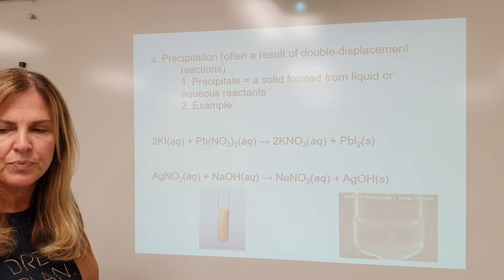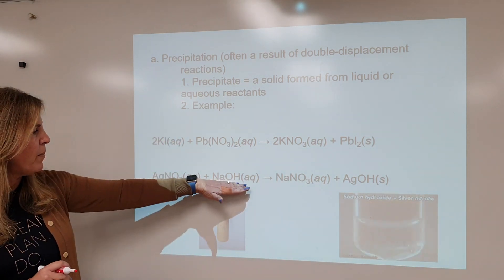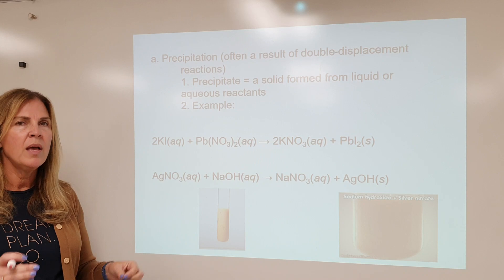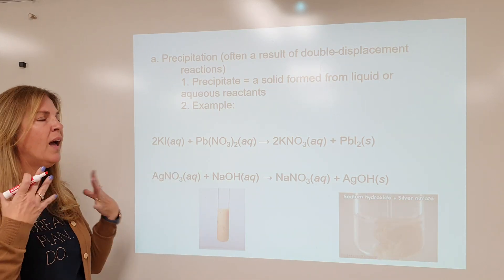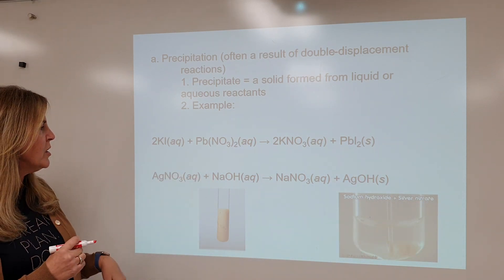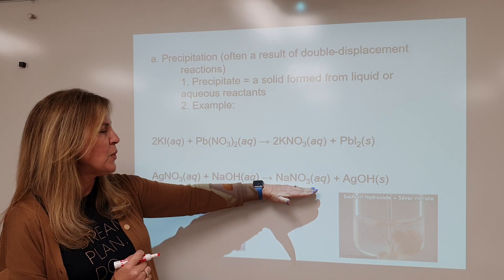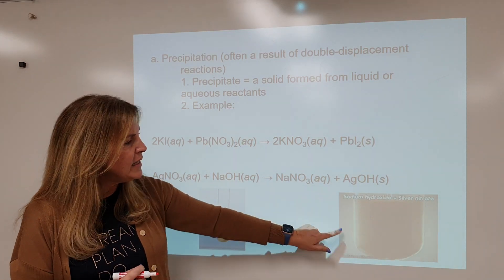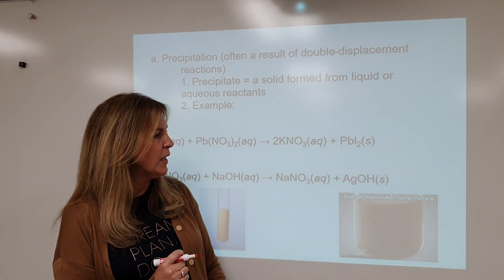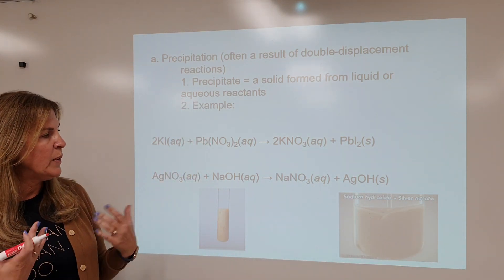Here's another reaction — silver nitrate plus sodium hydroxide. Double displacement means partners are going to switch. Looking at cations: silver and sodium trade partners, so silver goes with hydroxide making silver hydroxide, and sodium goes with nitrate. We start with two clear liquids, and when you mix them, we get a solid precipitate formed.